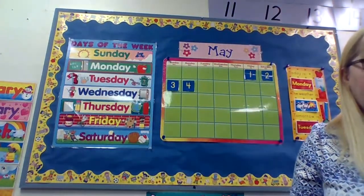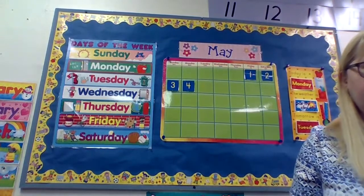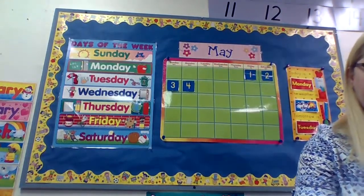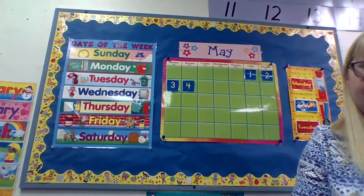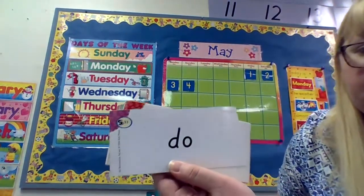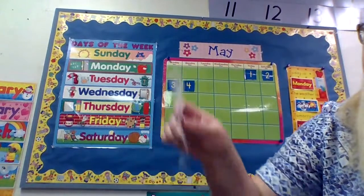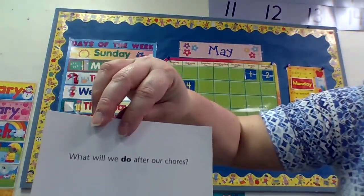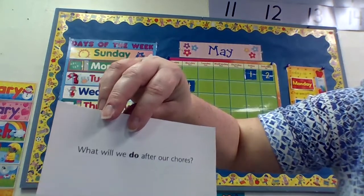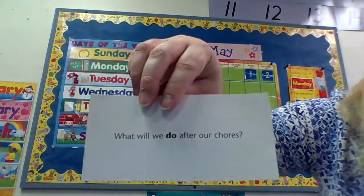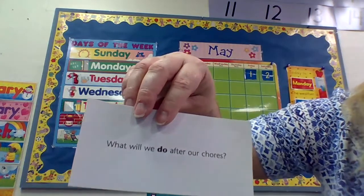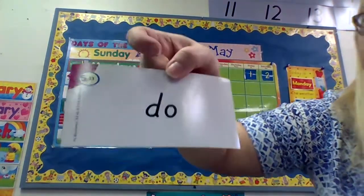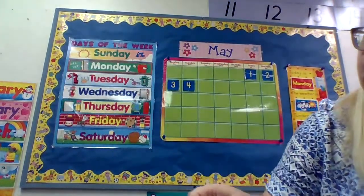And our sight words. We've got a new word this week — it's an easy peasy lemon squeezy word. It's two letters: the word 'do.' On the back it says, 'What will we do after our chores?' Well, I have an idea — play! That's probably what most kids do after their chores. That's our new word for the week: do.